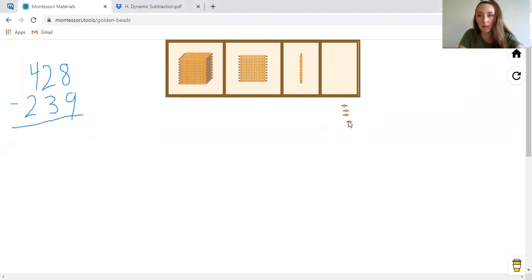One, two, three, four, five, six, seven, eight. We have two 10 bars for our 10 spot. Then we need four hundred squares for our hundred spot.